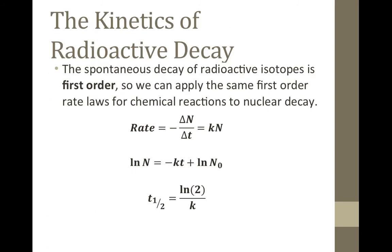One of the most studied types of kinetics is that of the spontaneous nuclear decay that radioisotopes undergo. This type of decay is always first-order decay, so we can apply all the rate laws and equations for first-order chemical reactions to nuclear decay reactions.